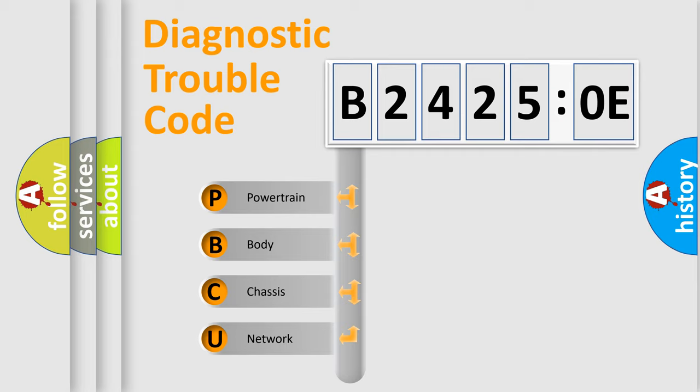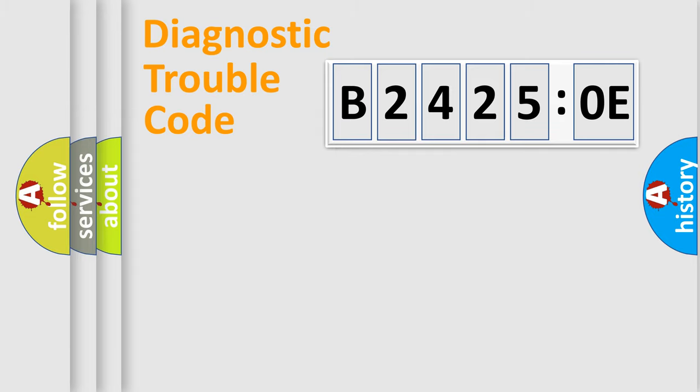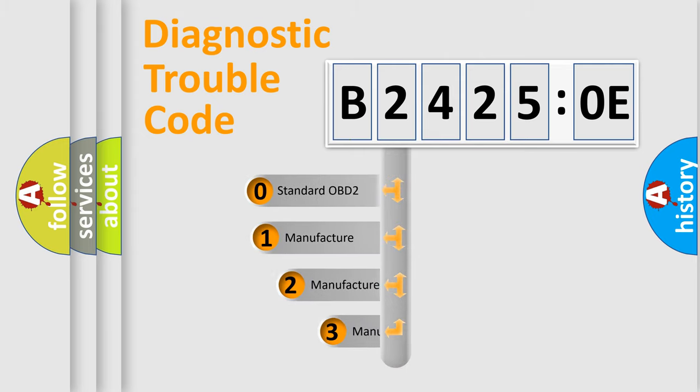We divide the electric system of automobile into four basic units: Powertrain, Body, Chassis, and Network. This distribution is defined in the first character code.